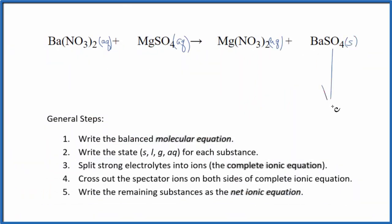When these two react, this will fall to the bottom of the test tube. This is a precipitation reaction. Next, we can split the strong electrolytes into their ions. That will be the complete ionic equation.